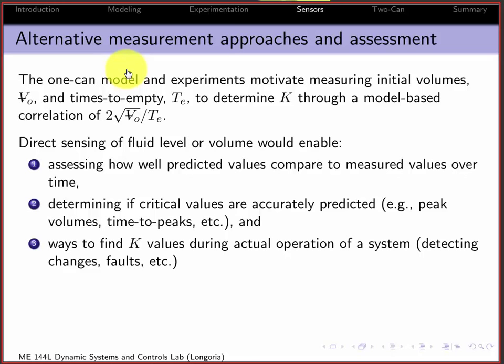So if you have a two-can system, you're going to have to run experiments for each can, and those measurements of volume and time to empty, multiple experiments that you'll run, allow you to determine k through this model-based correlation.